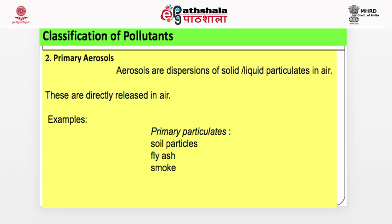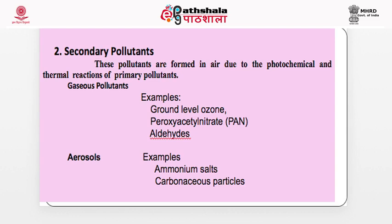Next are aerosol primary pollutants. Aerosols are dispersions of solid or liquid particulates in air, where air is the dispersion medium. Fog and mist are aerosols — in both cases, liquid drops are suspended in air. Primary aerosols are directly released into the atmosphere. Examples include soil particles, fly ash, and smoke. Fly ash is released during combustion in power plants. Soil particles become airborne during agriculture practices or when walking on soil surfaces.